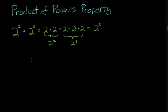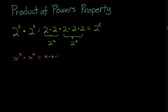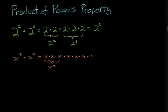Let's see what happens if we just use a variable. Let's say x cubed times x to the 4th power. We'll write it out in expanded form. That's going to be x times x times x — there's our x cubed — and we're going to multiply that by x to the 4th power: x times x times x times x. There's our x to the 4th power.